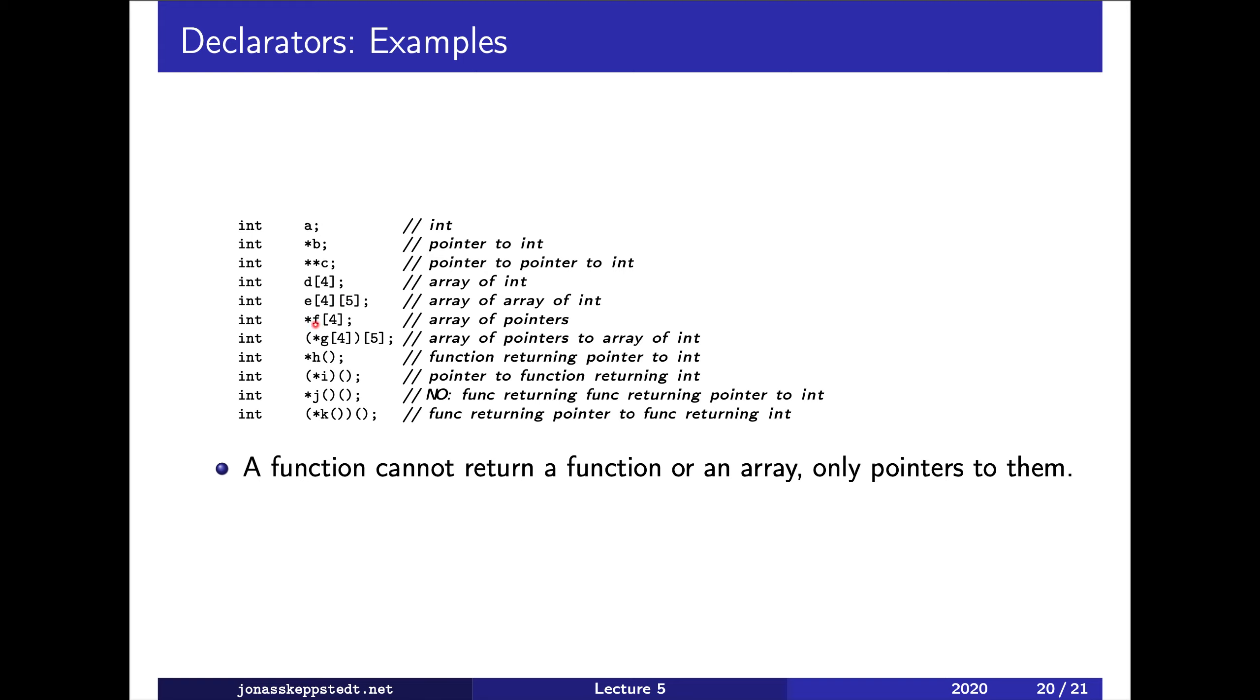Now we have, what should F be? We start looking to the right and there is a bracket. So F is an array of pointers to int.